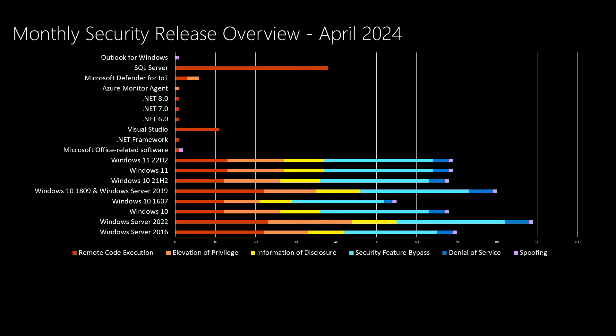We also have developer tools such as .NET Framework, Visual Studio, and .NET 6, 7, and 8, which all have vulnerabilities being mitigated this month. There's a vulnerability in Azure Monitor Agents, a handful in Microsoft Defender for IoT, and SQL Server has 38 distinct vulnerabilities this month — one of the reasons for the high overall number. To round out the release, there is one vulnerability in Outlook for Windows being addressed.